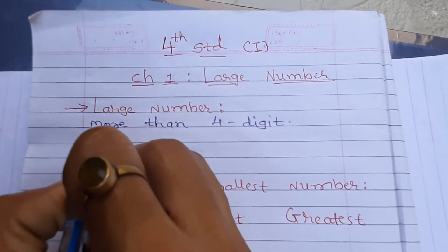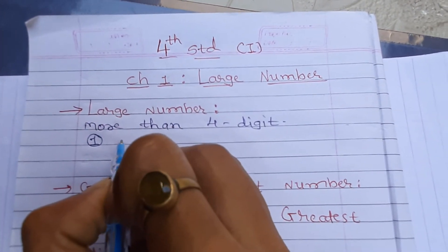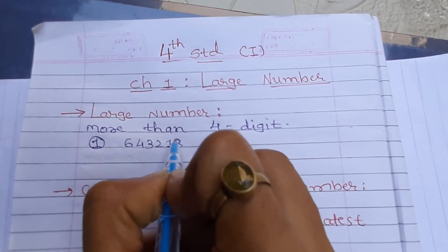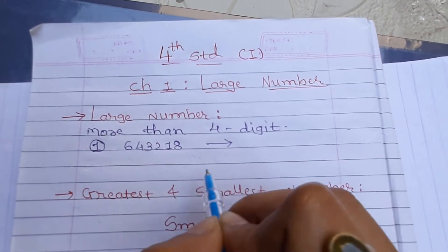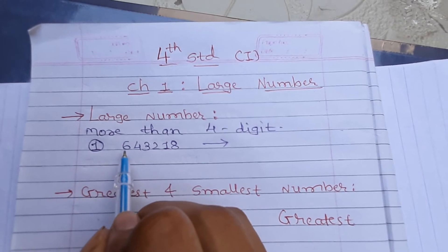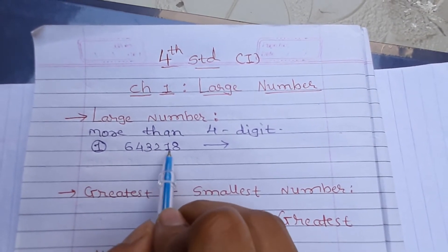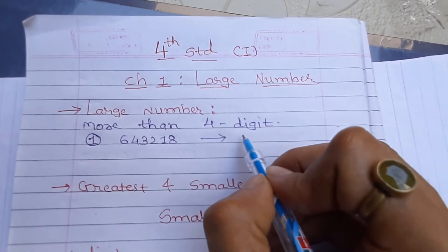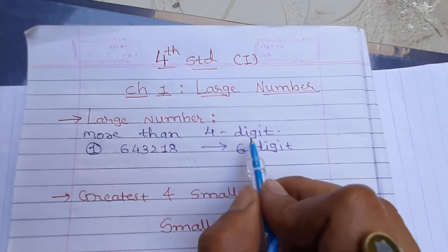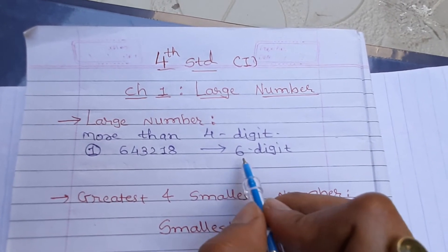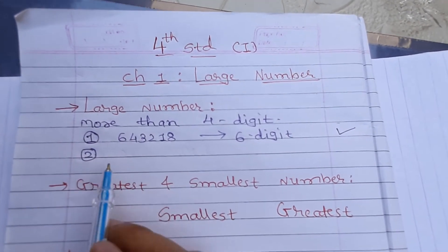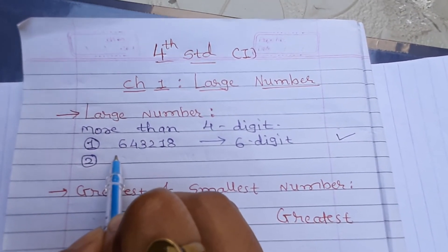Let's learn with examples. For example, if I have the number 6 4 3 2 1 8, to check if it is a large number, first I will count the digits: one, two, three, four, five, six. So this is a six-digit number. Is it more than four digits? Yes. So this is called a large number.